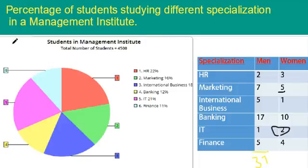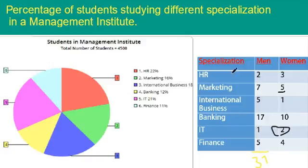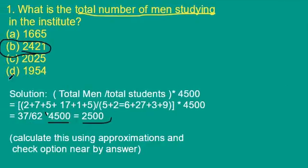Let us see this example problem. In this problem they have given the percentage of students in different departments — HR, Marketing, International Business, Banking, IT, and Finance — in pie chart form and table format. By studying this information we have to answer the given questions.